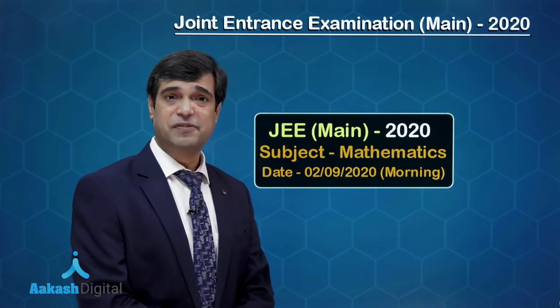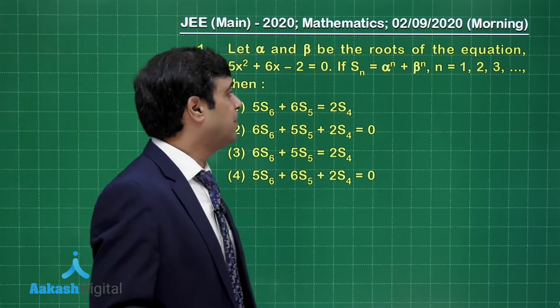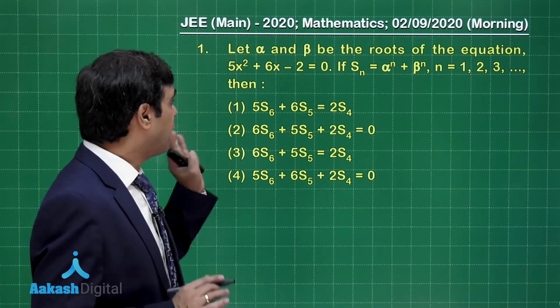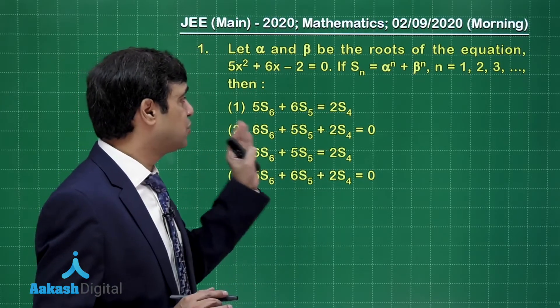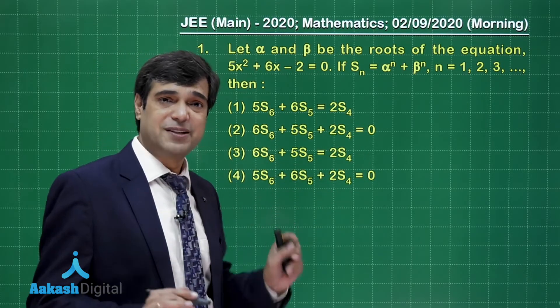Let's begin with the first question. It is from mathematics. Let alpha and beta be the roots of the equation 5x² + 6x - 2 = 0. Then we have to choose amongst these four options. Pretty simple one.